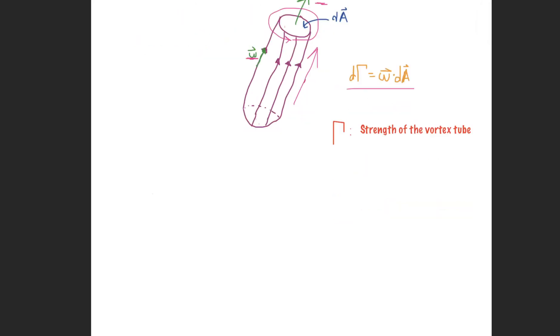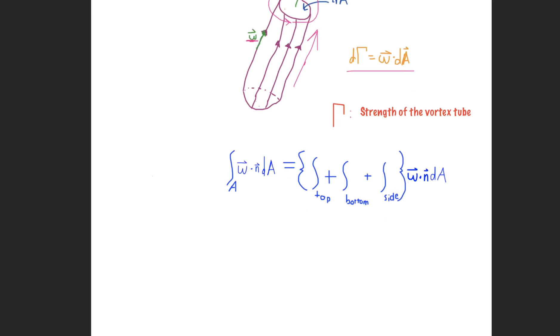And so from Stokes theorem, we know that this is going to be equivalent to the surface integral of the vorticity vector. So we take this surface integral of the vorticity and this splits up into three components.